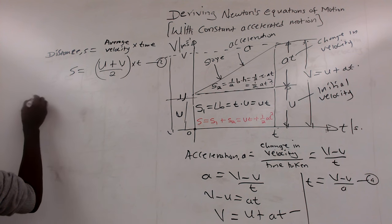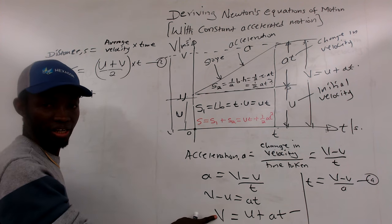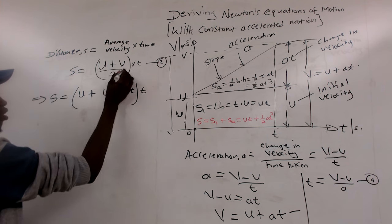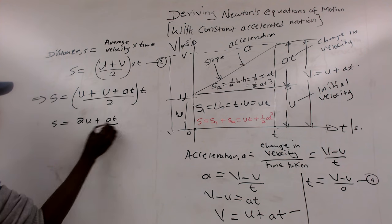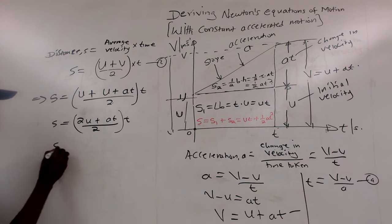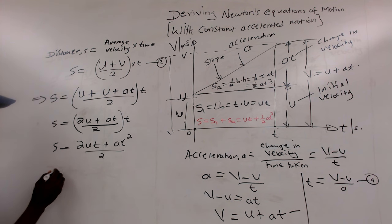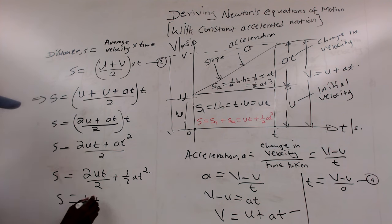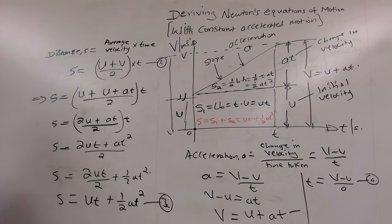We can also derive the third equation by substituting v equals u plus at into s equals u plus v all over 2 times t. This gives s equals u plus u plus at divided by 2 times t, which equals 2ut plus at squared all divided by 2. Simplifying, we get s equals ut plus half at squared. This gives us the third equation of motion.